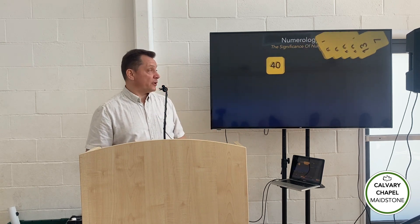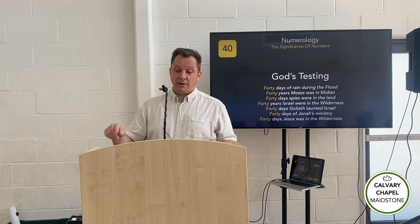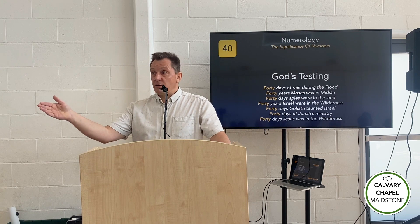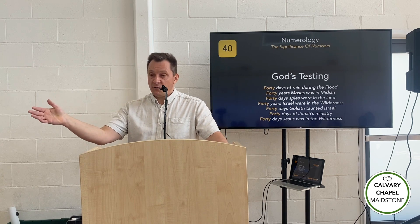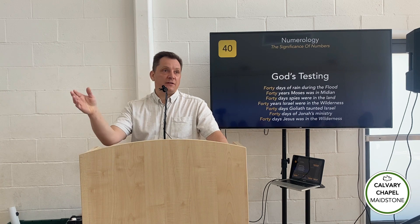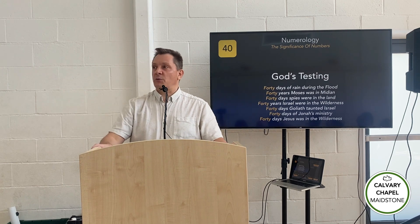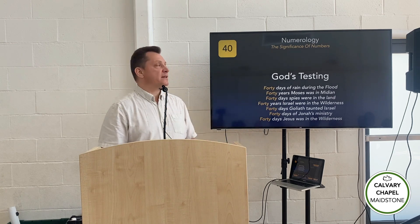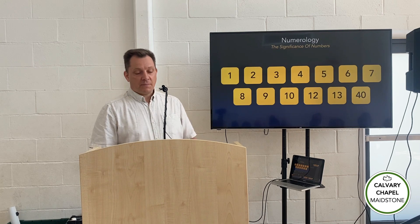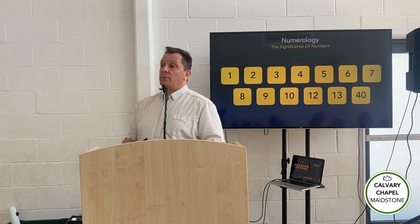Forty is the number of God's testing. The number of days the earth was tested with rain during the flood was forty. The number of years Moses was tested in Midian was forty. The number of days the spies were tested as they scouted the promised land was forty. The number of years Israel were tested as they sojourned through the wilderness was forty. The number of days Goliath tested Israel with his taunts was forty. The number of days Nineveh was tested under Jonah's ministry was forty. And the number of days Jesus was tested in the wilderness was forty. So forty is the number of testing. The most important numbers are three — the number of God — and seven — the number of spiritual perfection.